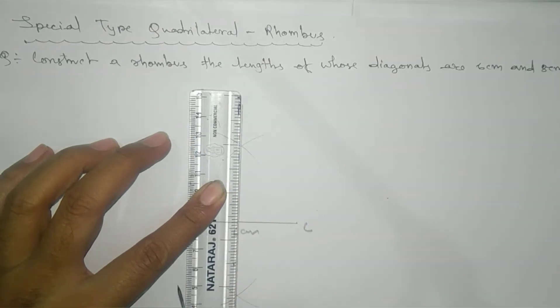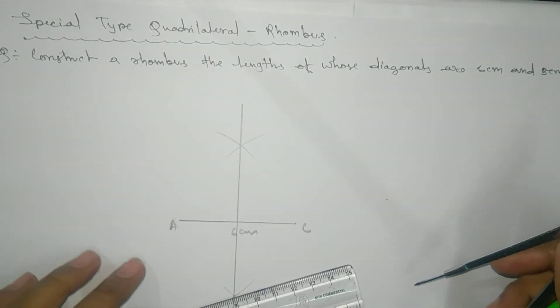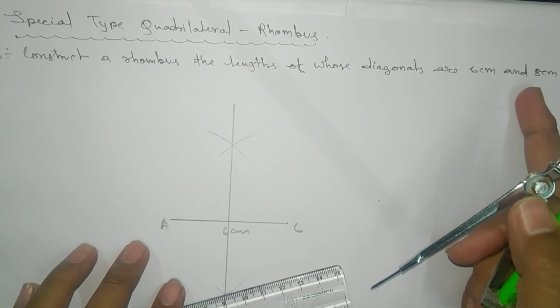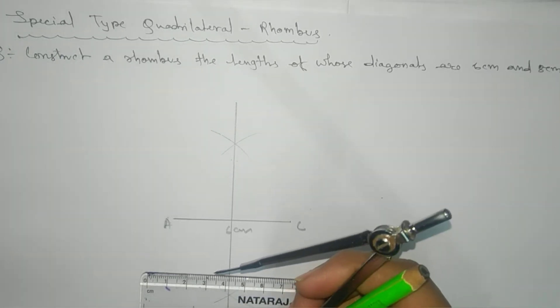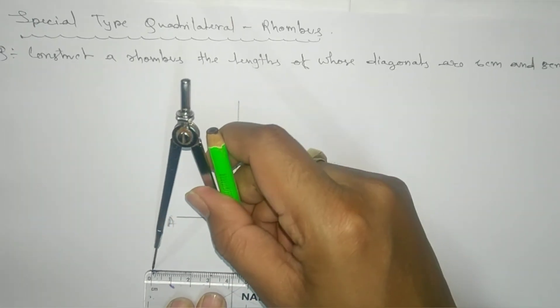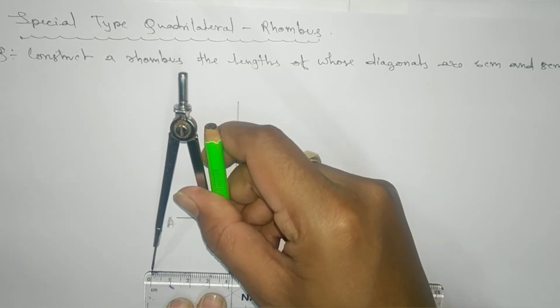We'll extend and join here, and just here and join it. After that, the other diagonal is 8 centimeter. We know that diagonals bisect each other, so here we need to go for half of 8 centimeter, that is 4 centimeter. We'll take the pin point, this is 4 centimeter.